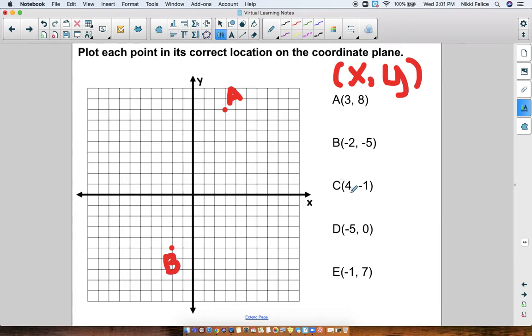Point C is at 4, negative 1. So I'm going to count my x-coordinate as positive 4. So I go to the right 1, 2, 3, 4 times. My y-coordinate is negative 1. So I go down 1 time. And I land right here. Coordinate C.